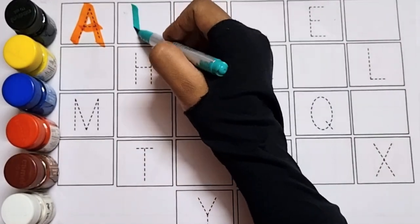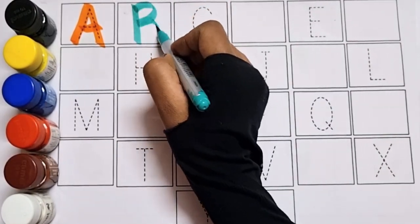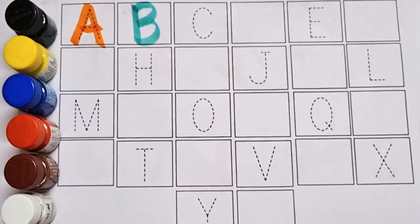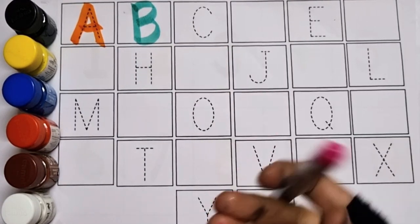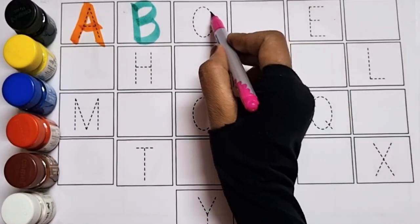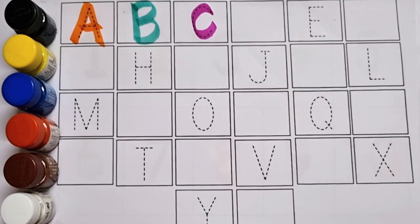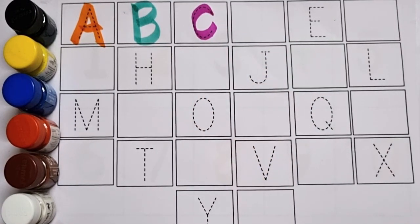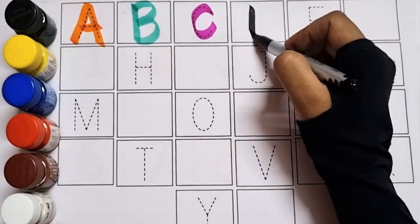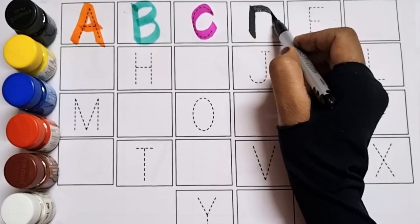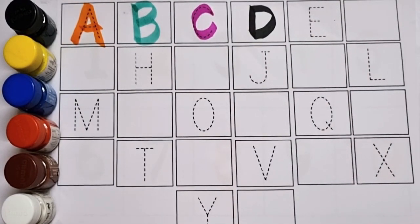Green color. B, B for ball. Pink color. C, C for cat. Black color. D, D for dog.